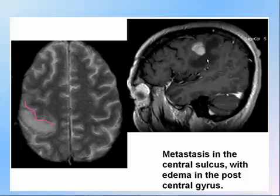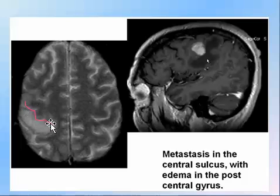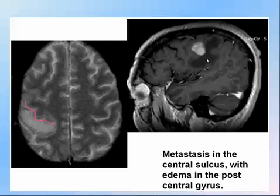Recalling the central sulcus, post-central gyrus, and precentral gyrus: the lesion here is posterior to the central sulcus, at the post-central gyrus. There is edema and a tumor visible. The deposit is seen posterior to the sulcus in the region of the post-central gyrus.